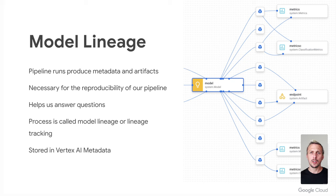Pipelines can also be parameterized — we saw that in the basic demo. You can pass parameters when running the pipeline. This is a great feature if you need to run the same pipeline for different datasets or specific to your users. Everything we can do in the UI, we can also do via the API or the SDK.